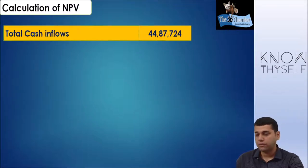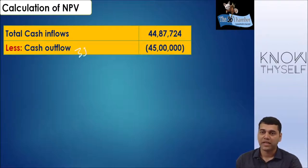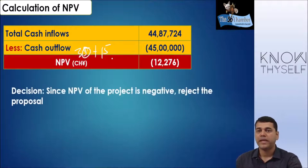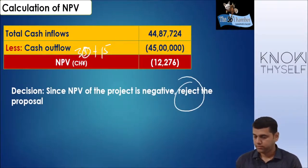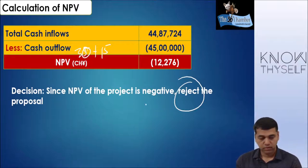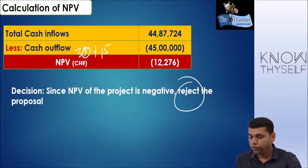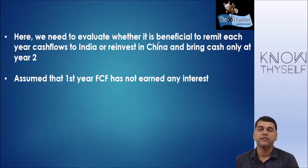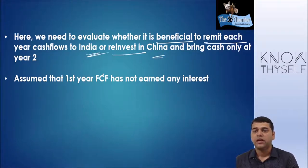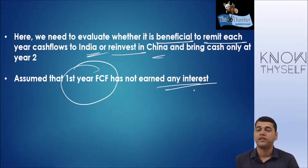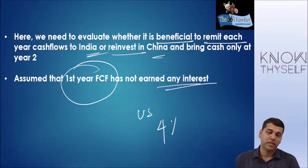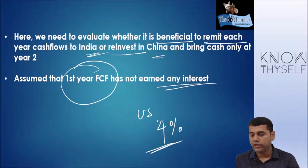For part two, we need to evaluate whether to repatriate cash flows to India immediately each year or hold and transfer at end of year two. Since the question is silent on whether FCF earns any interest in China, we assume nothing has been earned. Two assumptions will be considered in the examination: immediate repatriation and repatriation at the end of year two.